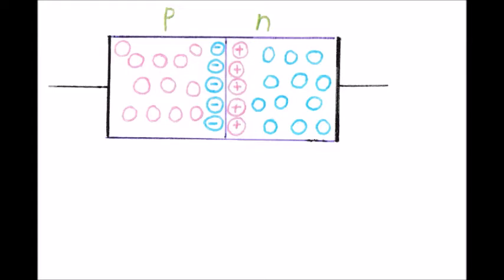What happens to the barrier potential during forward bias? An energy hill is created by the electric field between positive and negative ions in the depletion region. This energy hill is known as the barrier potential, and it prevents free electrons from diffusing at the equilibrium state. When a bias voltage is supplied, the free electrons will then have sufficient energy to overcome the barrier potential.